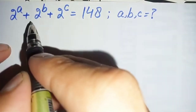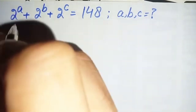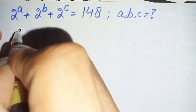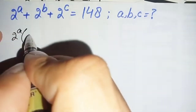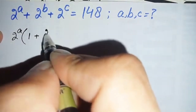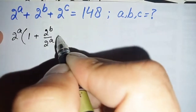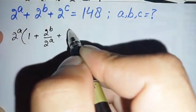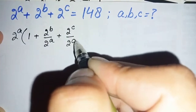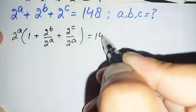From the left hand side, we will take 2 raised to power a as common. After taking 2 raised to power a common, this becomes 2 raised to power a, times the quantity: 1 plus 2 raised to power b divided by 2 raised to power a, plus 2 raised to power c divided by 2 raised to power a, equals 148.